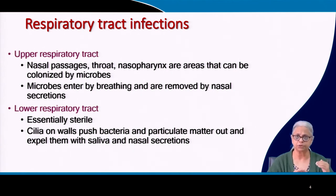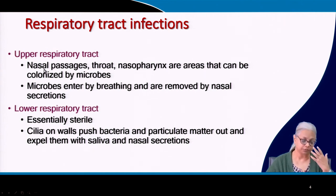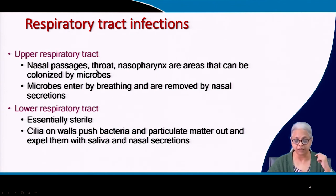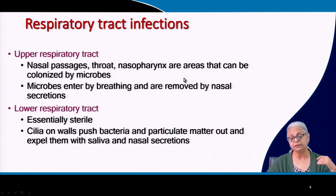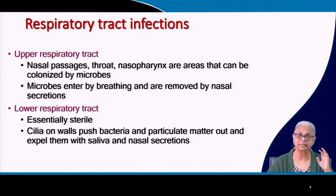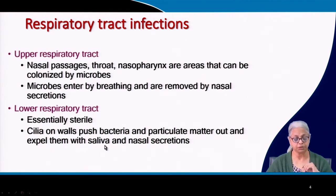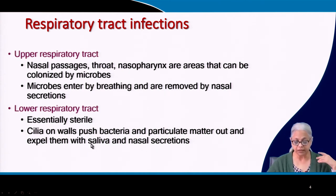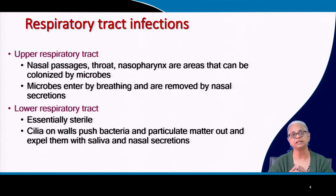Within respiratory tract infections we have upper and lower respiratory tract. The upper respiratory tract includes the nasal passages, nose, throat, and nasopharynx — areas commonly colonized by microbes, bacteria, and viruses that enter by breathing and are removed by nasal secretions. The lower respiratory tract in a healthy human being is considered essentially sterile. Cilia on the walls of the lower respiratory tract push both bacteria and particulate matter out, expelled with saliva and nasal secretions — this is the body's way of defending itself from microorganisms.